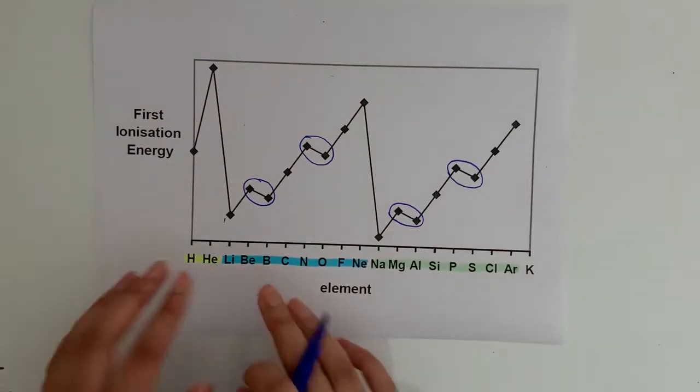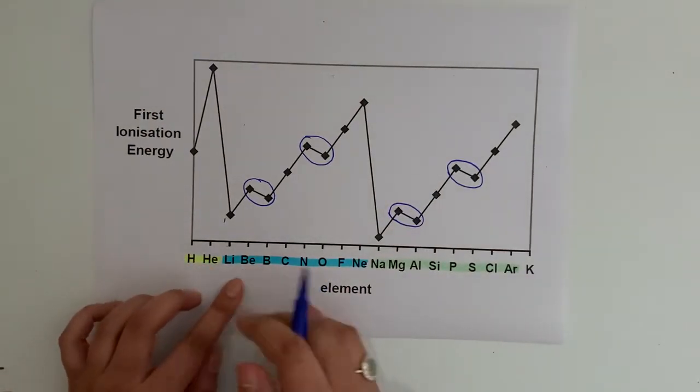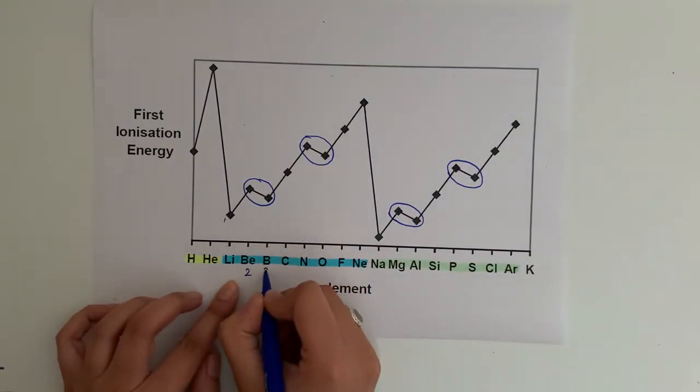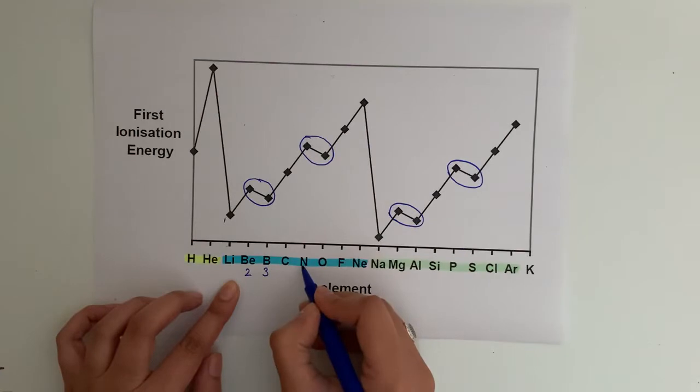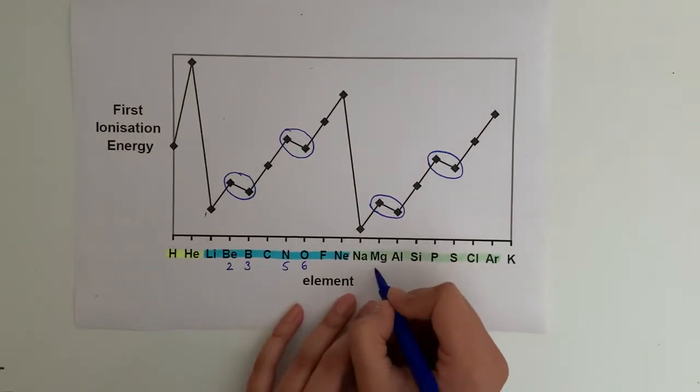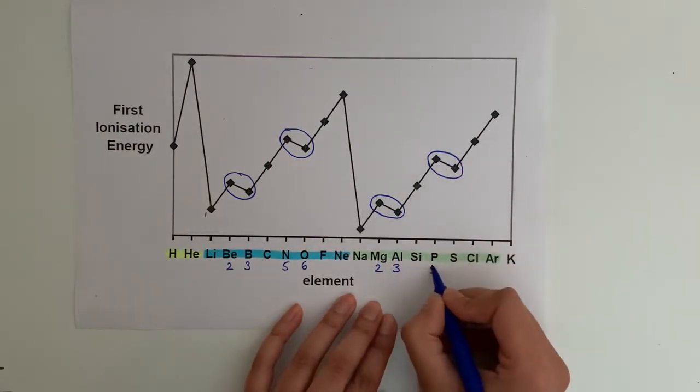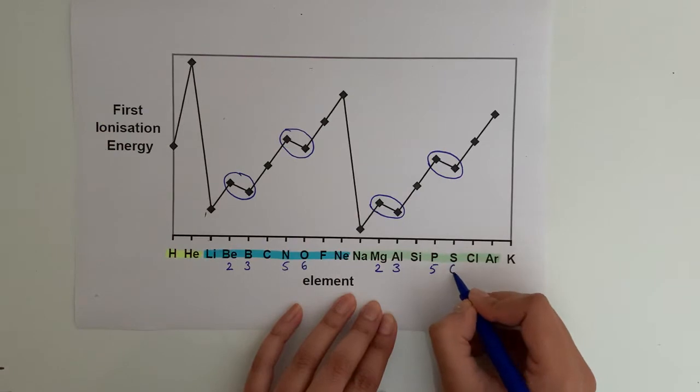If we clarify which groups they're in, beryllium is in group two, boron is in group three. For nitrogen, it's in group five and oxygen is in group six. We now go to period three: magnesium is group two, aluminium is group three, phosphorus is group five and sulfur is group six.